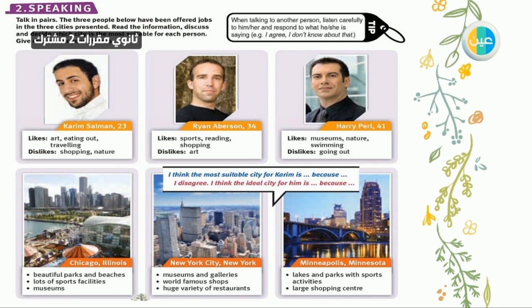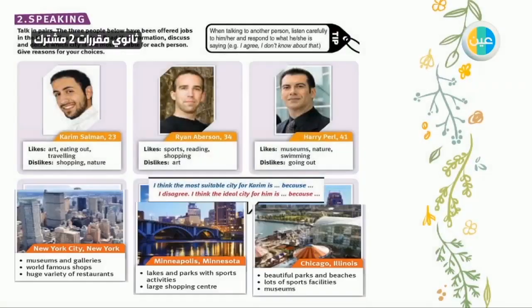In your book you have a guide you can use when making the conversation. For example, you start by saying 'I think the most suitable city for Kareem is...' and you choose one of these cities, giving your reasons based on his interests. If you disagree with someone's choice, you have to give a reason — you can say 'he doesn't like that' or 'I don't agree with you' — but you must give an important reason for your answer.